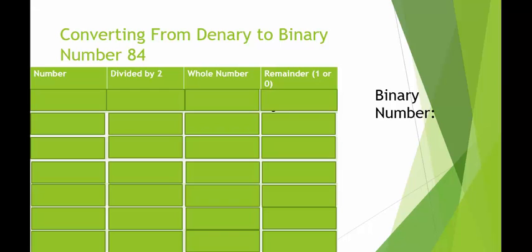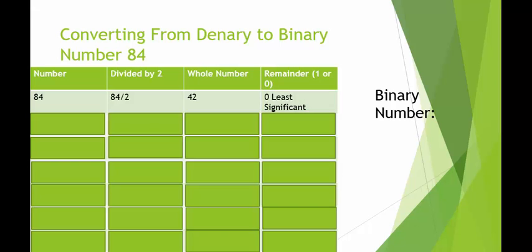So let's get started. The first number we have is 84 — a random number I chose, you can use any number you want. If you look, you'll see I have a number column, a divided-by-two column, a whole number column, and a remainder column where a one or a zero will go. So we have our number 84. We're going to divide by two using the same system every single time. So 84 divided by two — I take my whole number 42. There is no decimal, so I'm going to have a remainder of zero, which is my least significant digit.